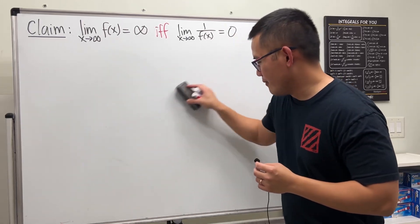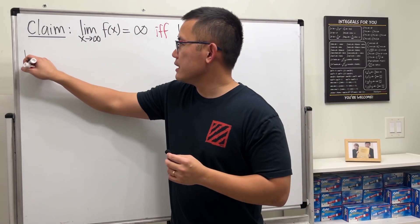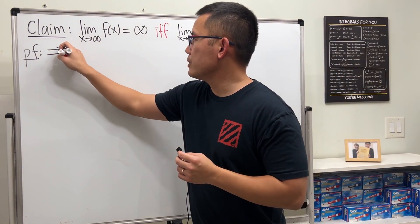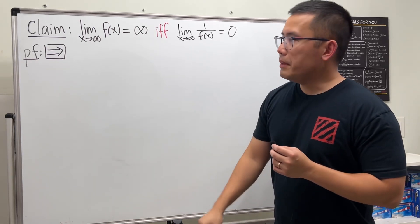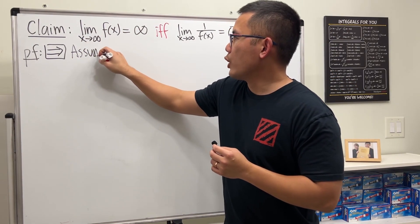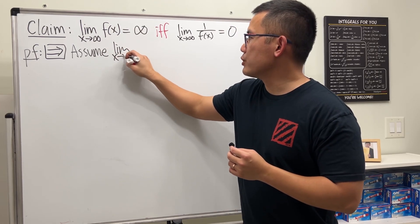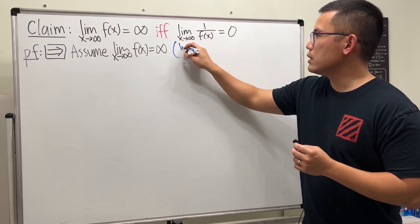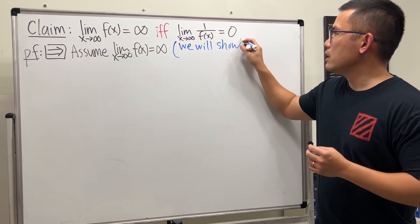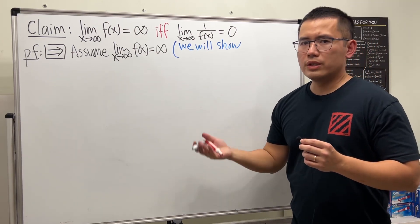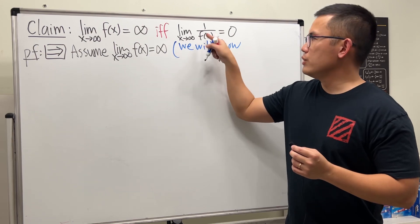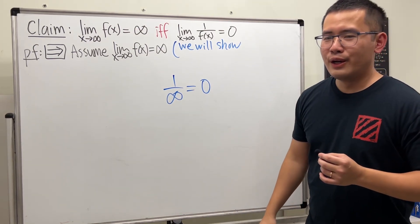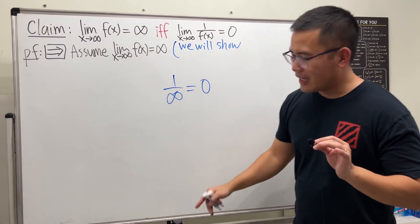Now for the proof. For the bi-directional statement, let's indicate which direction we're going first. We'll assume the limit as x approaching infinity of f(x) equals infinity, and then show that 1 over f(x) goes to zero. But what does that mean? You can't just say 1 over infinity equals zero — if you write that down, your instructor will put zero down for your proof too. Don't do that.